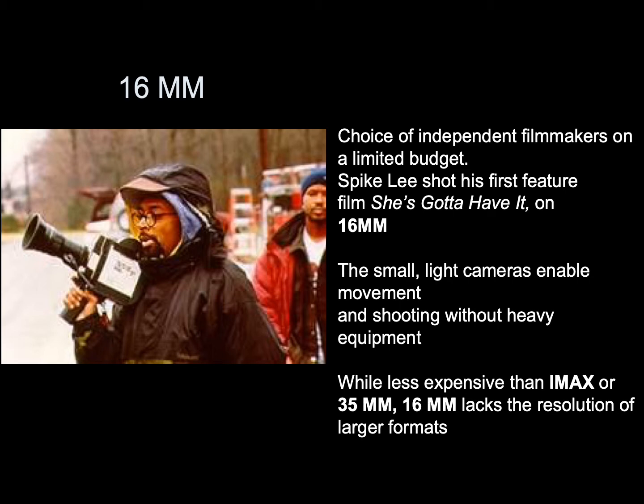16mm is the choice of independent filmmakers on a limited budget. Spike Lee shot his first feature, She's Gotta Have It, on 16mm. The small, light cameras enable movement and shooting without heavy equipment. While less expensive than IMAX and 35mm, 16mm lacks the resolution of larger formats.